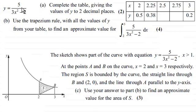But for the first part anyway, we're given that y equals 5 all divided by 3x squared minus 2. And we're asked to complete the table giving the values of y to two decimal places for two marks. So if you'd like to have a go at this part and haven't done so already, just give you a moment to pause the video.